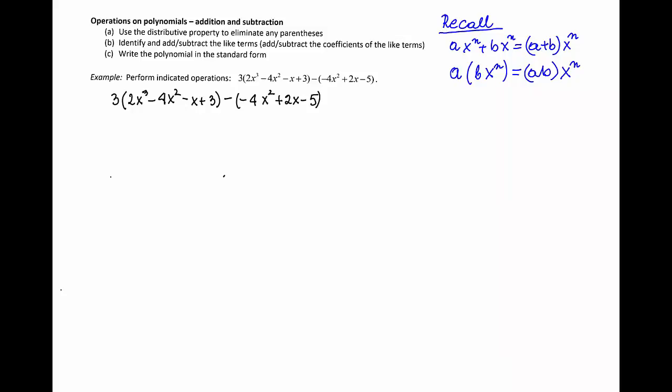We'll review here briefly operations on polynomials and we'll start with addition and subtraction. To add or subtract two polynomials, we'll have to remove first the parentheses using distributive property and then add or subtract the like terms.